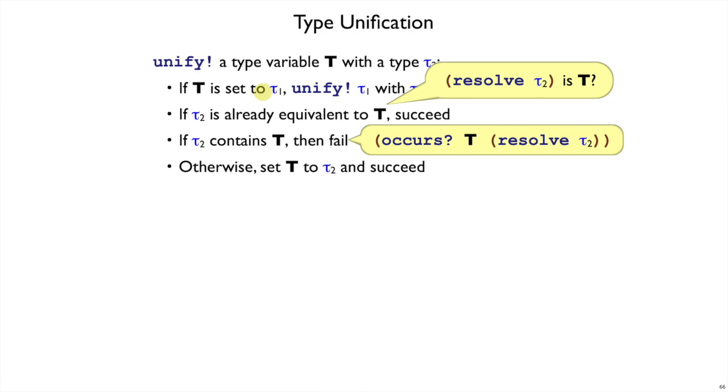That takes care of all the possibilities for a type variable and some other type. But now we have to consider all the possibilities where the first argument to unify is not a type variable. If tau2 is a type variable, we can just swap the order of the arguments and call unify again.